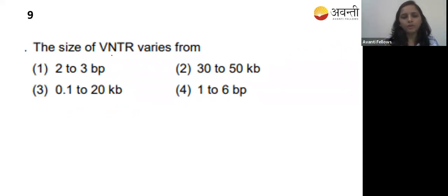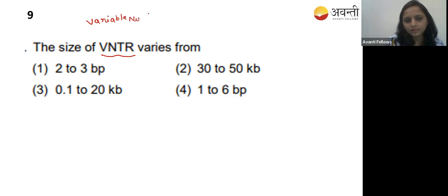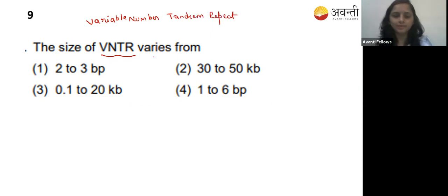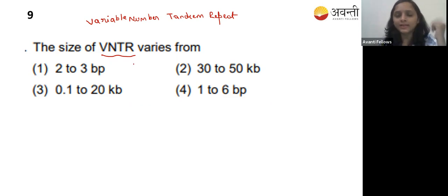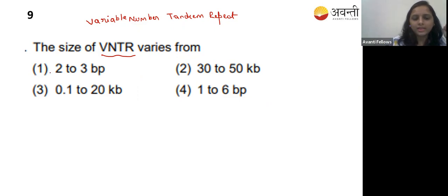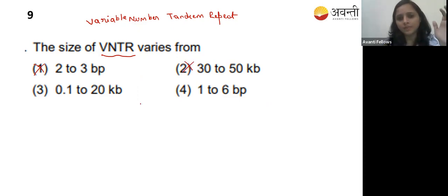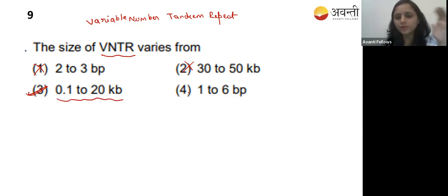Ninth question: the size of VNTR - Variable Number Tandem Repeat. You studied this in DNA fingerprinting and the human genome project. Option one - 2 to 3 base pairs - no. Option two - 30 to 50 base pairs - no. Option three - 0.1 to 20 kilobase pairs - yes, that is correct. Option four - 1 to 6 base pairs - also not correct. The correct answer is option three: 0.1 to 20 kilobase pairs.